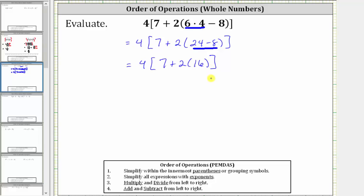Now that we've simplified within the innermost parentheses, we now simplify within the brackets. Notice in the brackets we have addition as well as multiplication. And once again, because we multiply and divide before we add and subtract.